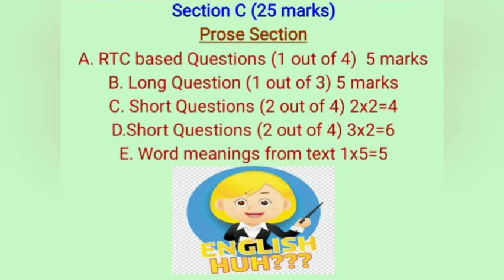Next you will get one long question for five marks, choosing from three different questions — attempt only one. Then there will be two short questions for two marks each, total four marks. After that, two short questions for three marks each, total six marks. Finally, word meanings — you will get some words from the main textbook and write their meanings, worth one into five, equal to five marks.